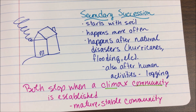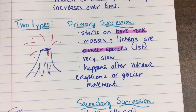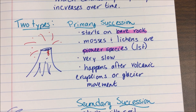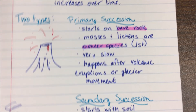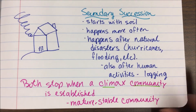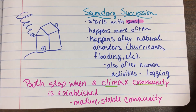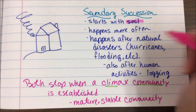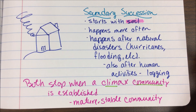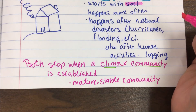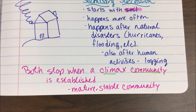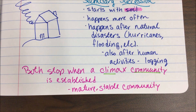To summarize: primary succession starts on bare rock, you have pioneer species, and it's very, very slow. Secondary succession starts with soil, happens more often, and occurs after natural disasters. Both stop whenever a climax community is established. Hopefully this is easy to understand — let me know if you have any questions.